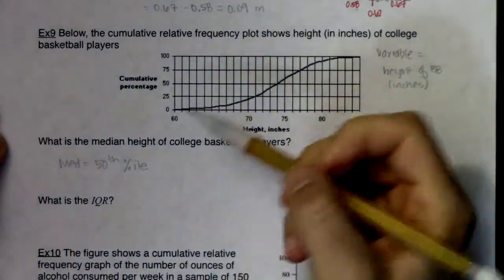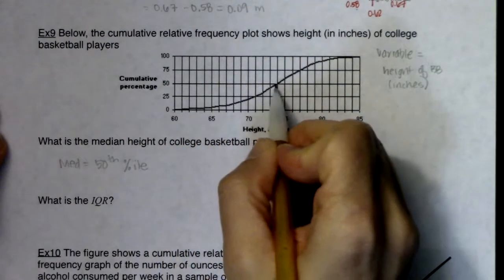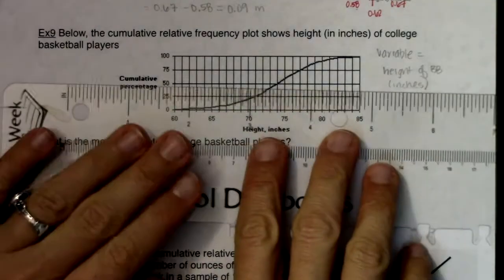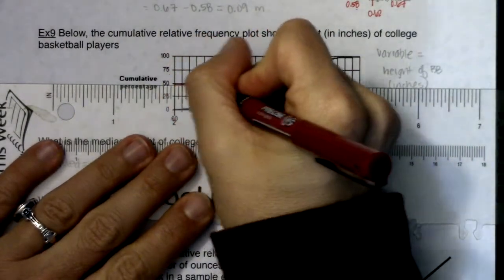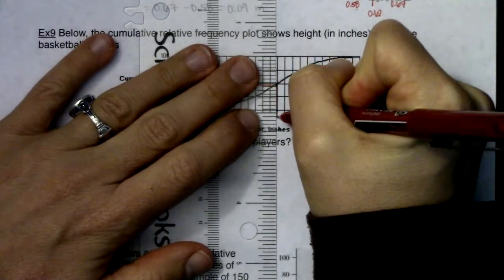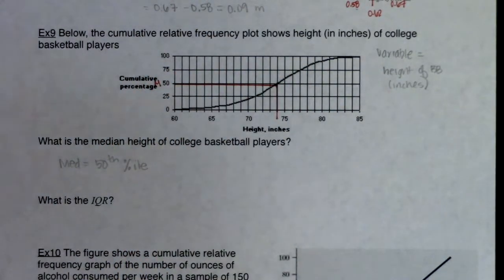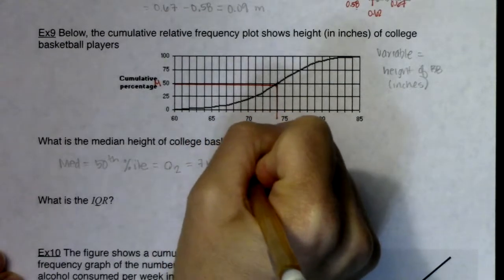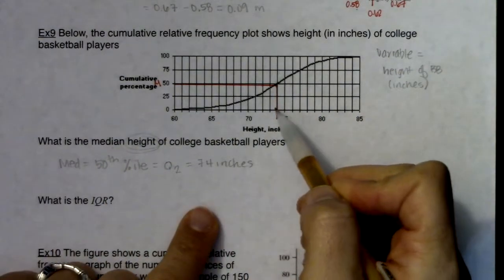The same two questions: what's the median, what's the IQR? The median corresponds to the 50th percentile — also called Q2. Since the y-axis is percentage, go up to 50 percent and see what corresponding x-value that gives. Going halfway up the y-axis, the 50th percentile looks to be about 74 inches. So the median is 74 inches.